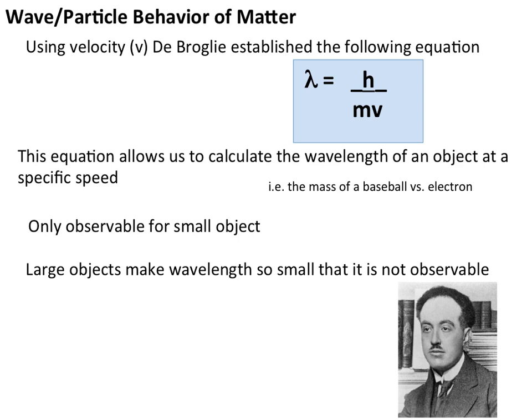So he came up with the equation you see here. He manipulated one of the previous equations we've seen. Instead of having m equals h over frequency times the speed of light, he substituted mv. And v, in this case, is not frequency. This is velocity.